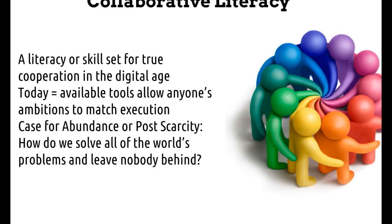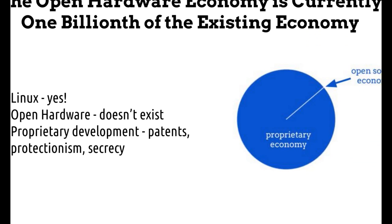People like Peter Diamandis in his books Abundance or Bold talk about high-tech versions of that. We're focused much more on ecological integration — both technology and ecology play prominent roles, paying attention to heirloom wisdom, not only the advanced technology we have today. What we have to start with, though, is a hard open source hardware economy. That's pretty much non-existent.